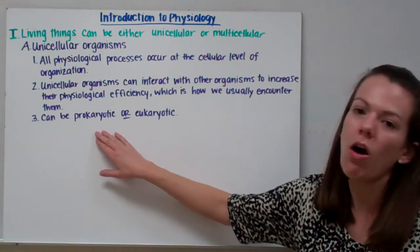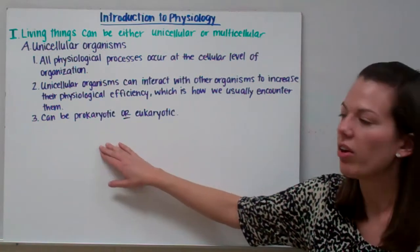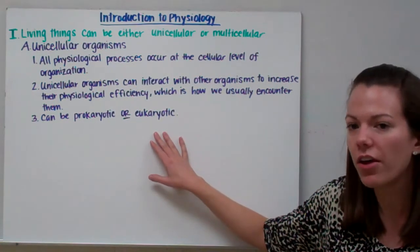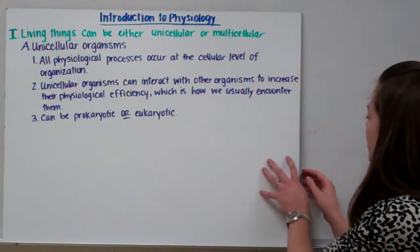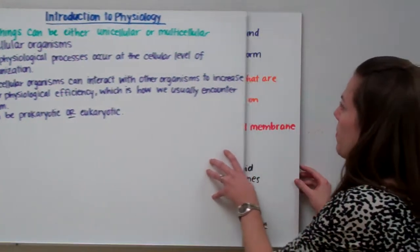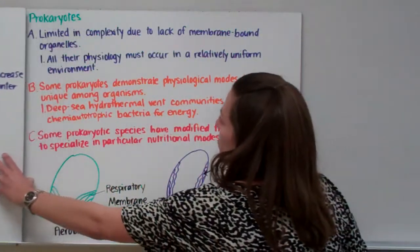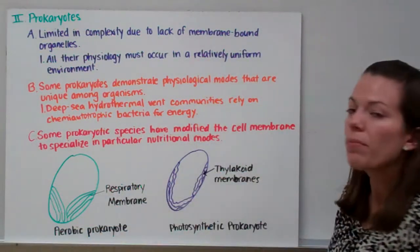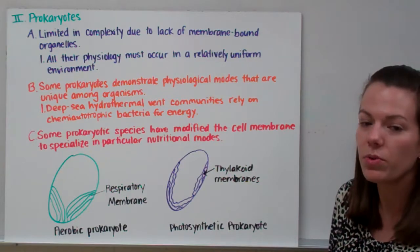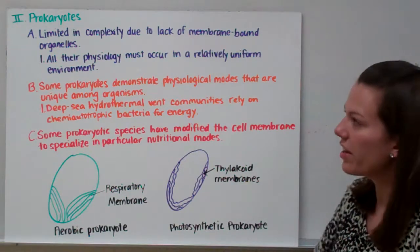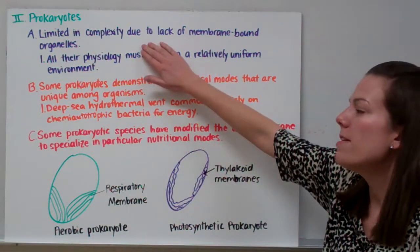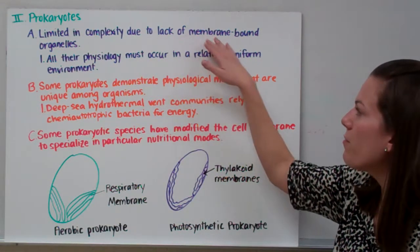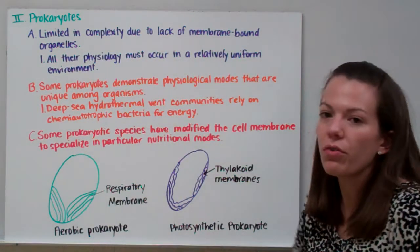Prokaryotes are always unicellular, while eukaryotes are only sometimes unicellular. Prokaryotes, which have no nucleus, are limited in complexity due to their lack of membrane-bound organelles.